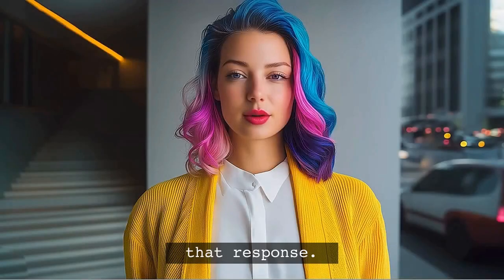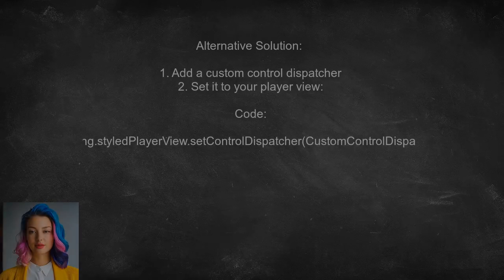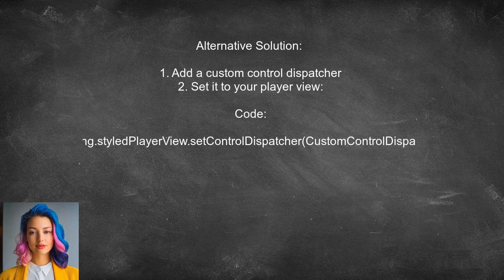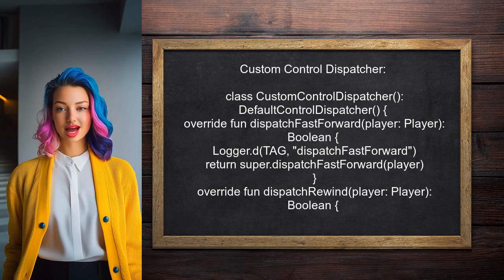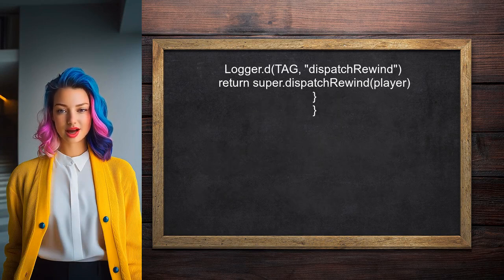Another approach is to add a custom control dispatcher to intercept ExoPlayer's control UI events. This can be done by setting a custom control dispatcher on your player view. In the custom control dispatcher, you can override methods like dispatchFastForward and dispatchRewind to perform specific actions when these buttons are pressed, allowing you to listen for each control event individually.